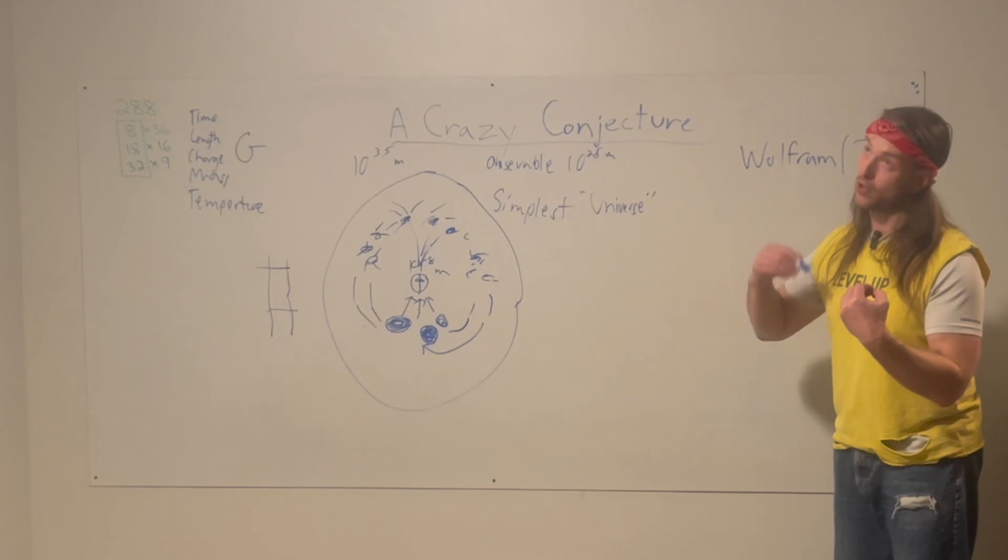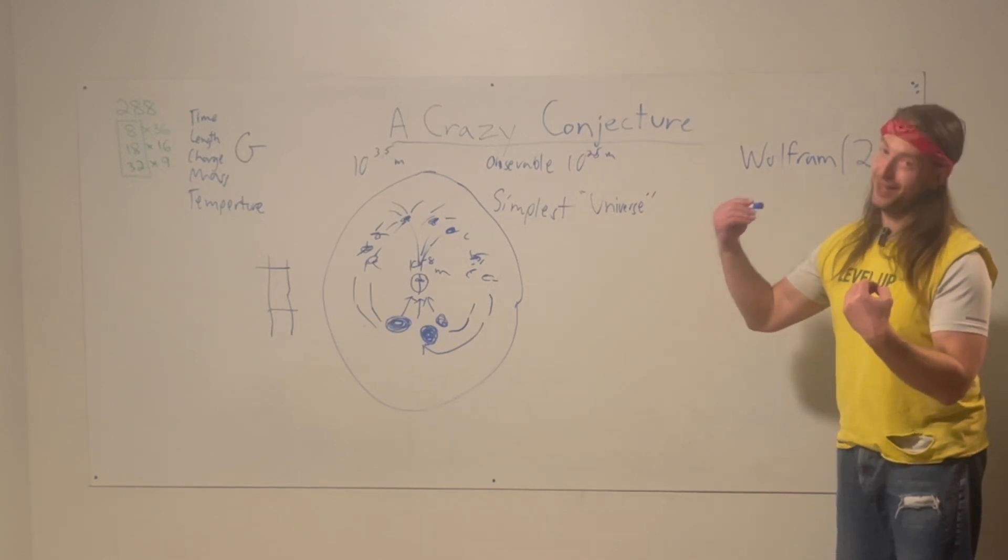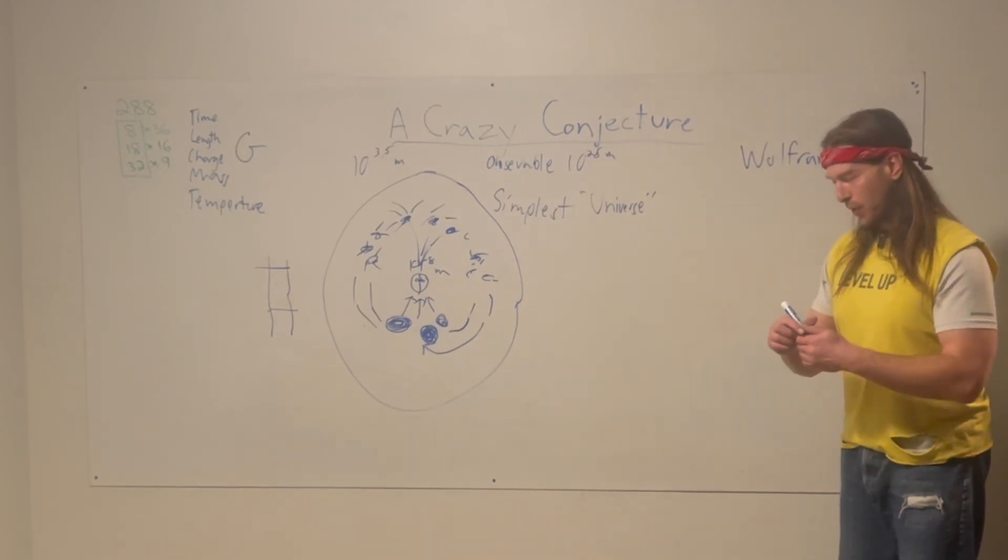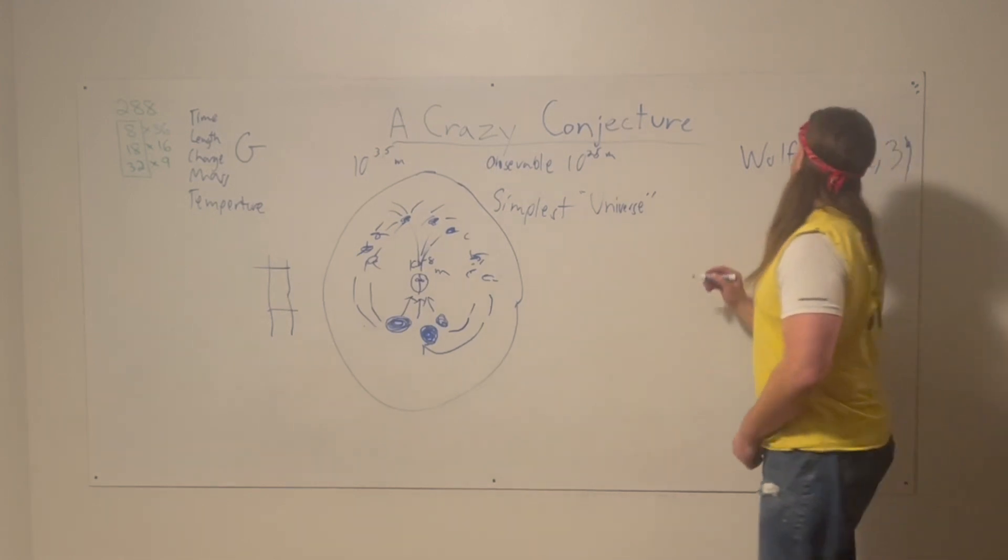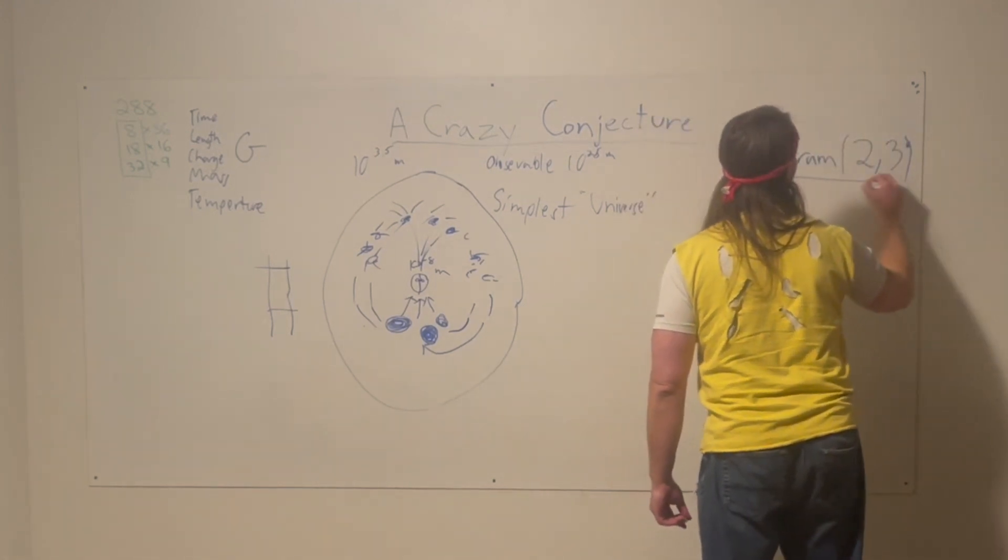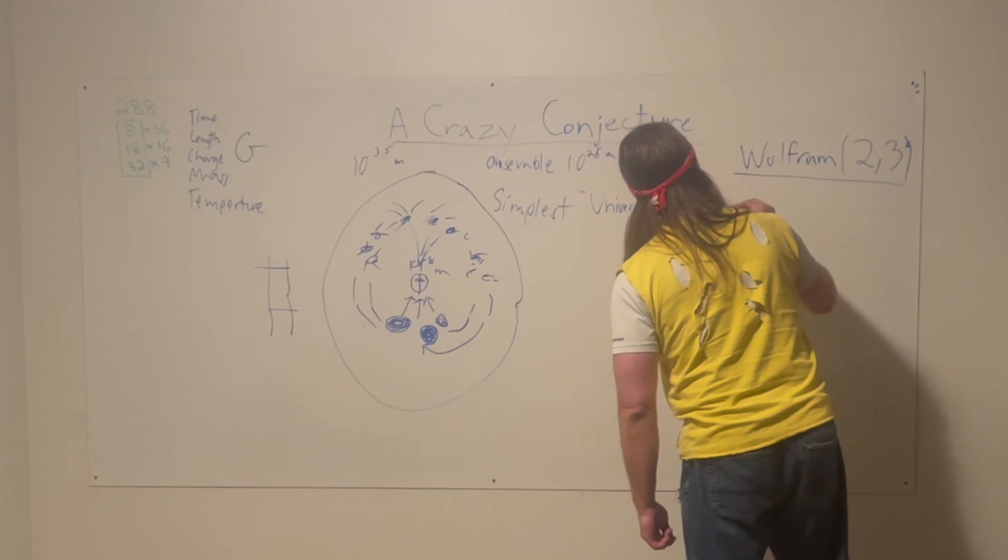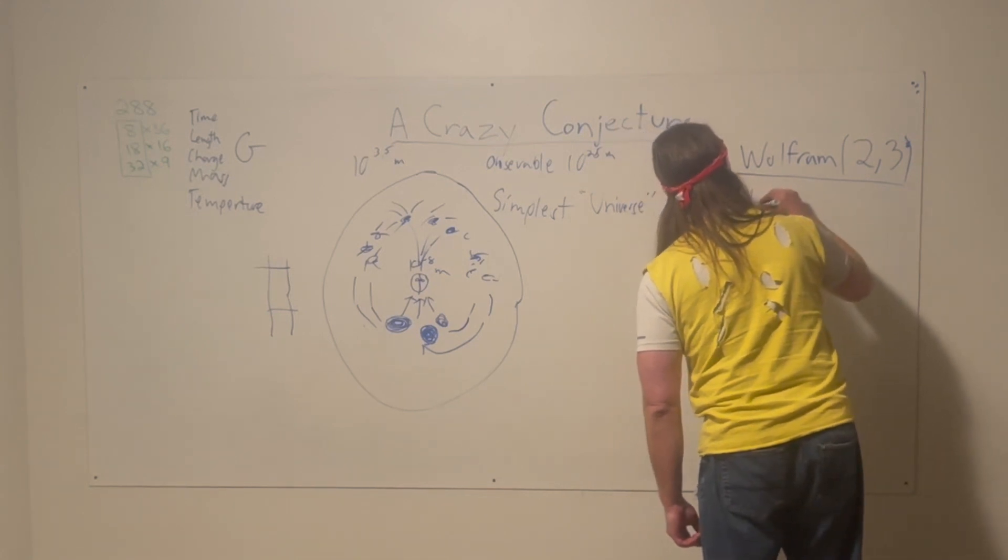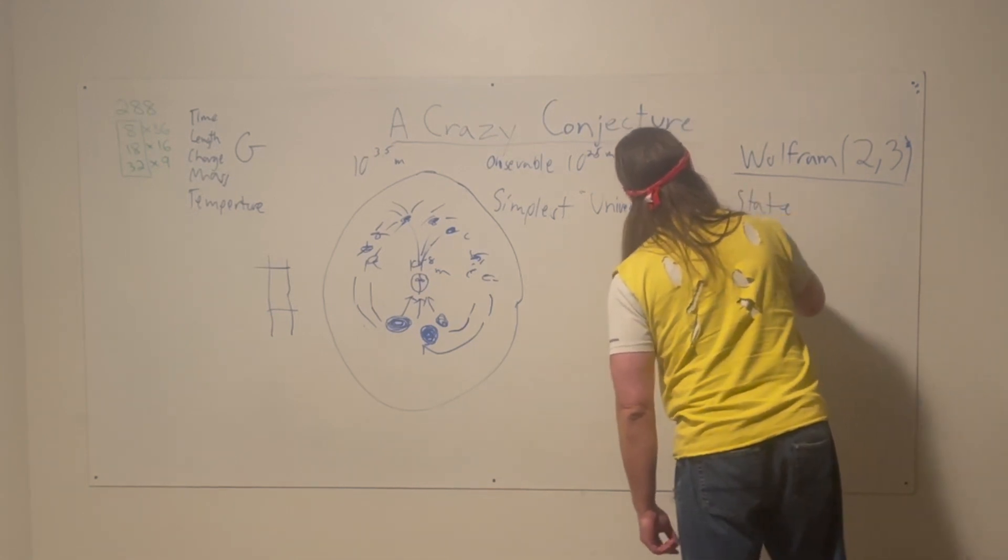Now, the reason why, or at least one of the reasons, is actually very interesting. We'll get into that in just a moment. But the claim was that this 2-3 machine, so it's two state and it's three color.